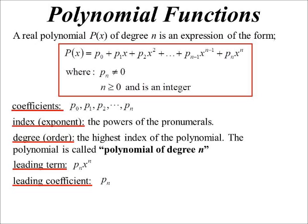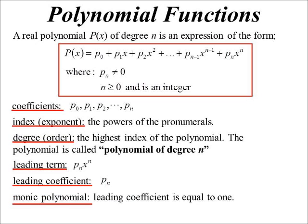Leading coefficient then is just the coefficient of the leading term. So make sure you read the question. Make sure you know what they're asking. If they say leading term, then you include x to the power of whatever. If they're just asking for the leading coefficient, you don't include the algebra. It's just the number in the front. A monic polynomial is when that leading coefficient is equal to one. And that usually makes factorising easier. We like monics.